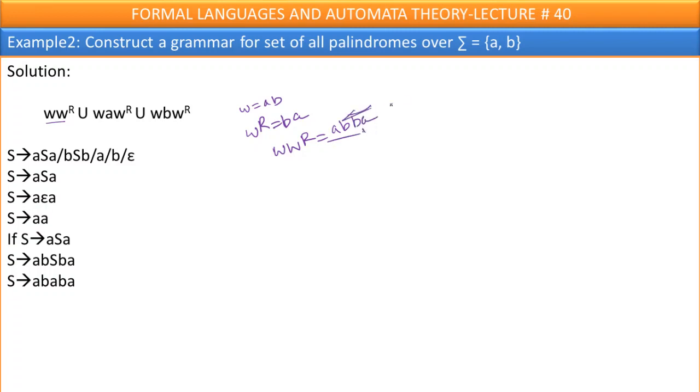Means I can say w, w power r length one, two, three, four. This is even length palindrome. This is odd length palindrome. Palindrome's length may be even length, may be odd length. Therefore, let me write productions. S goes to aSa. Palindrome means if I generate a from beginning, I must also generate a from the end. If I generate b from the beginning, I must also generate b at the end.